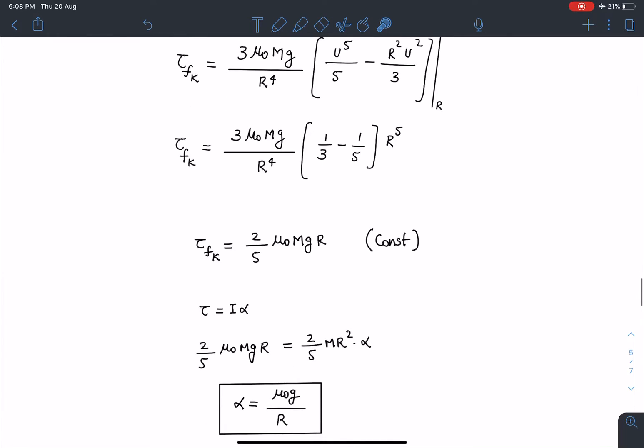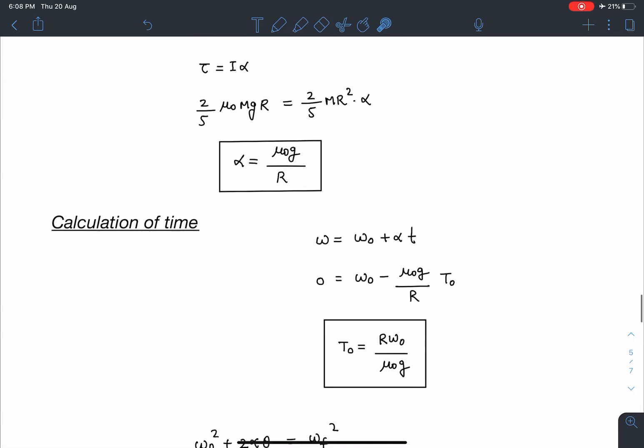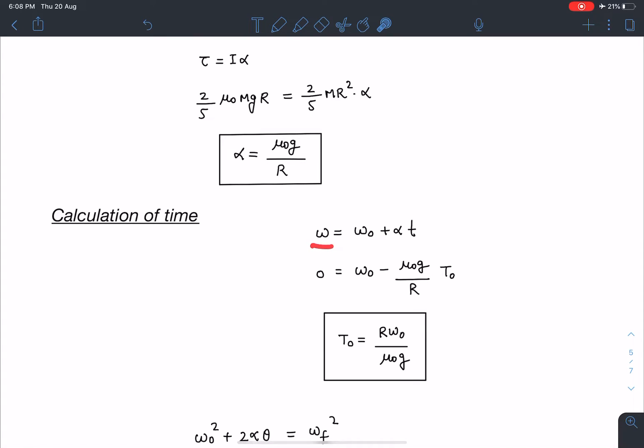So now I can write tau equals I alpha. I'll be getting the angular acceleration of this solid hemisphere which is coming out as mu naught g by R, which is a very simple relation and it is constant. So calculation of time becomes very simple. We can write omega final equals omega initial plus alpha t. On substituting the values, we get T naught as R omega naught by mu naught g.